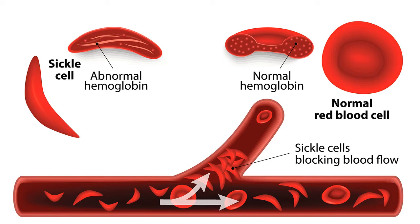An aplastic crisis occurs when there is diminished production and increased destruction of red blood cells, usually triggered by a viral infection or lack of folic acid or adequate building blocks. The child experiences sudden onset of profound anemia and pallor with severe signs and symptoms.